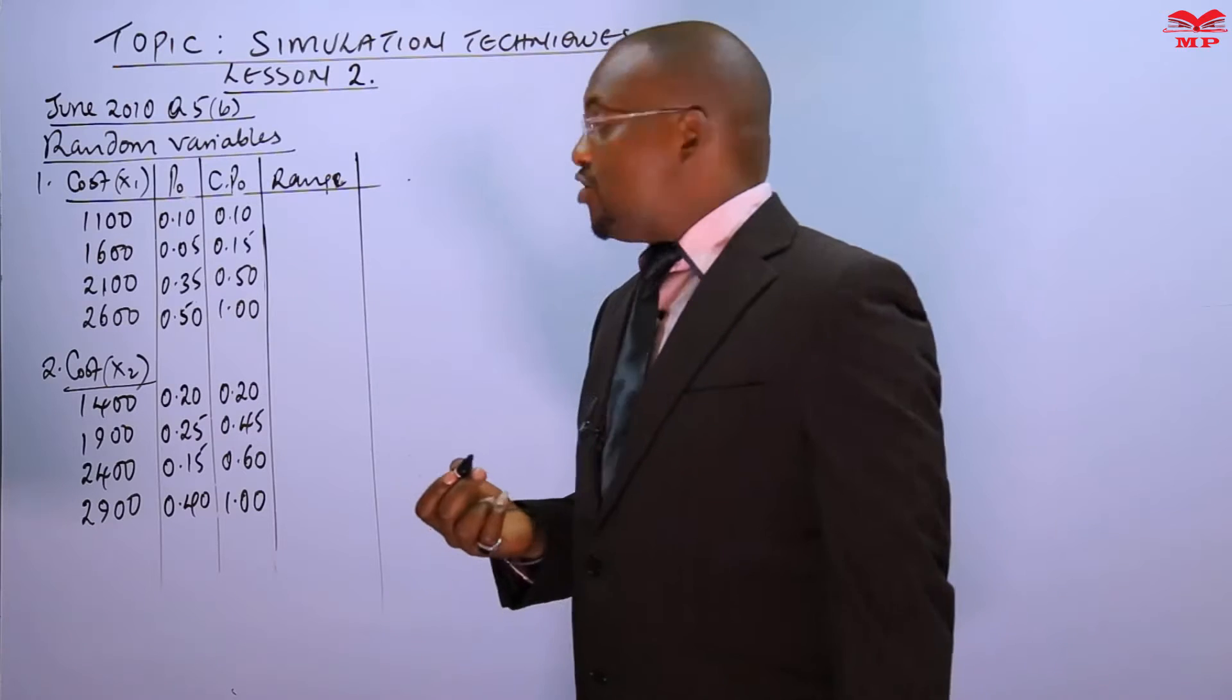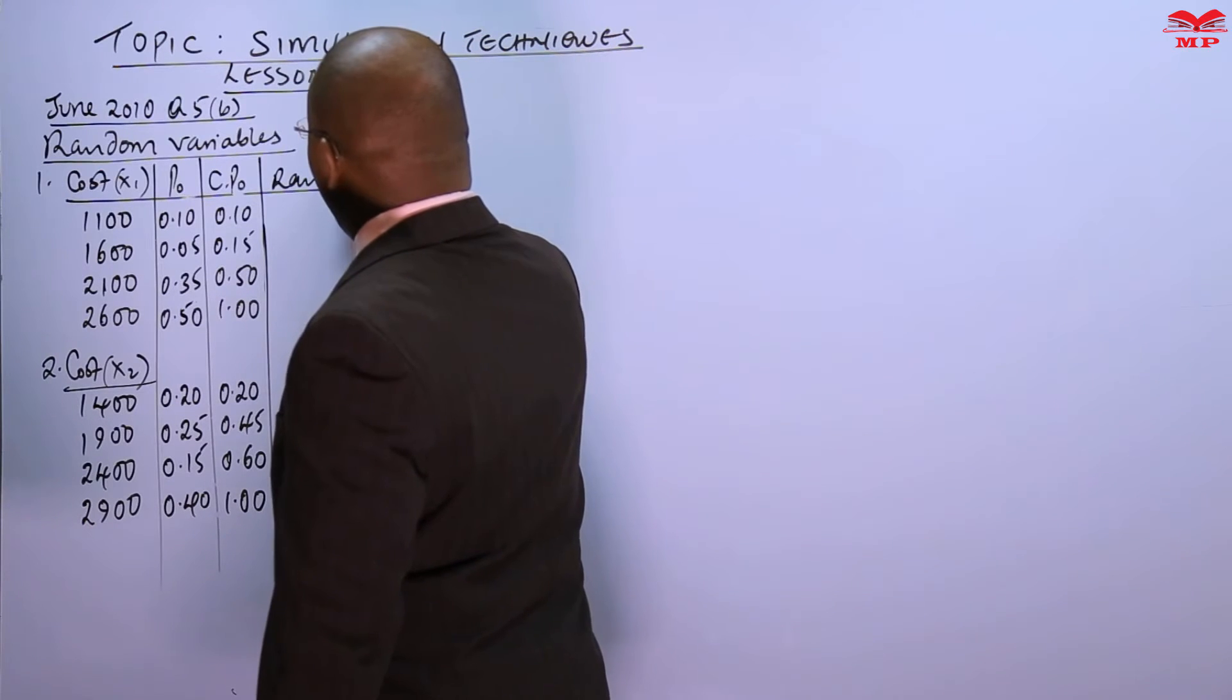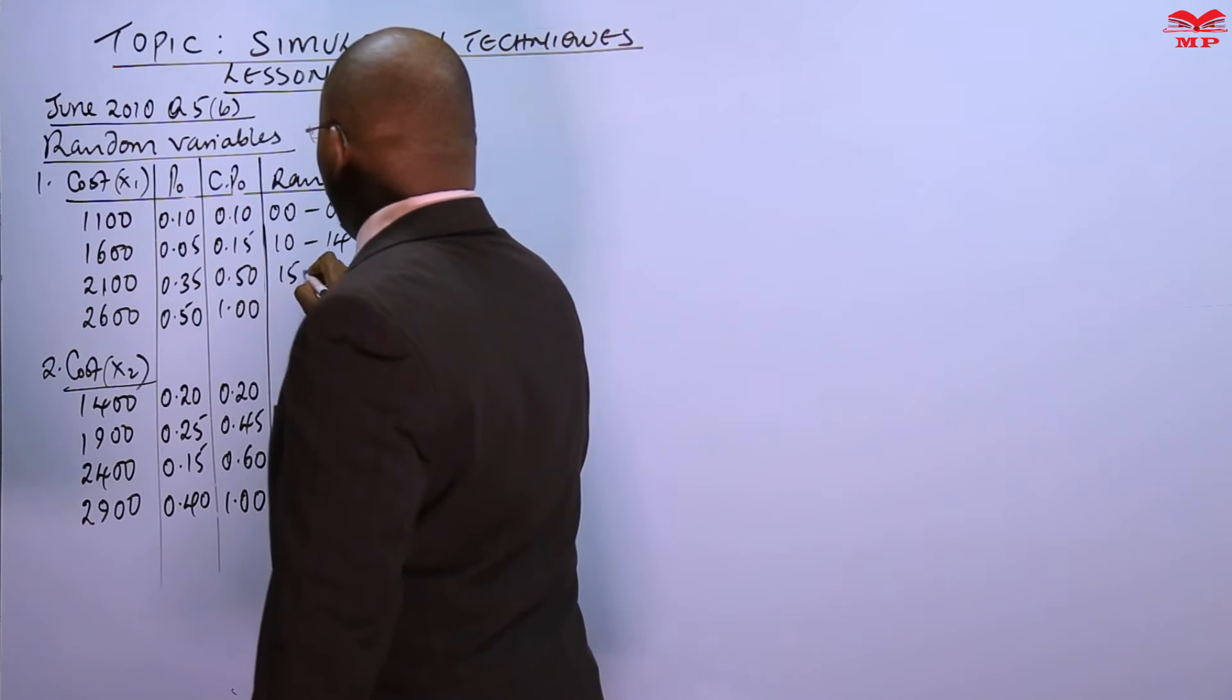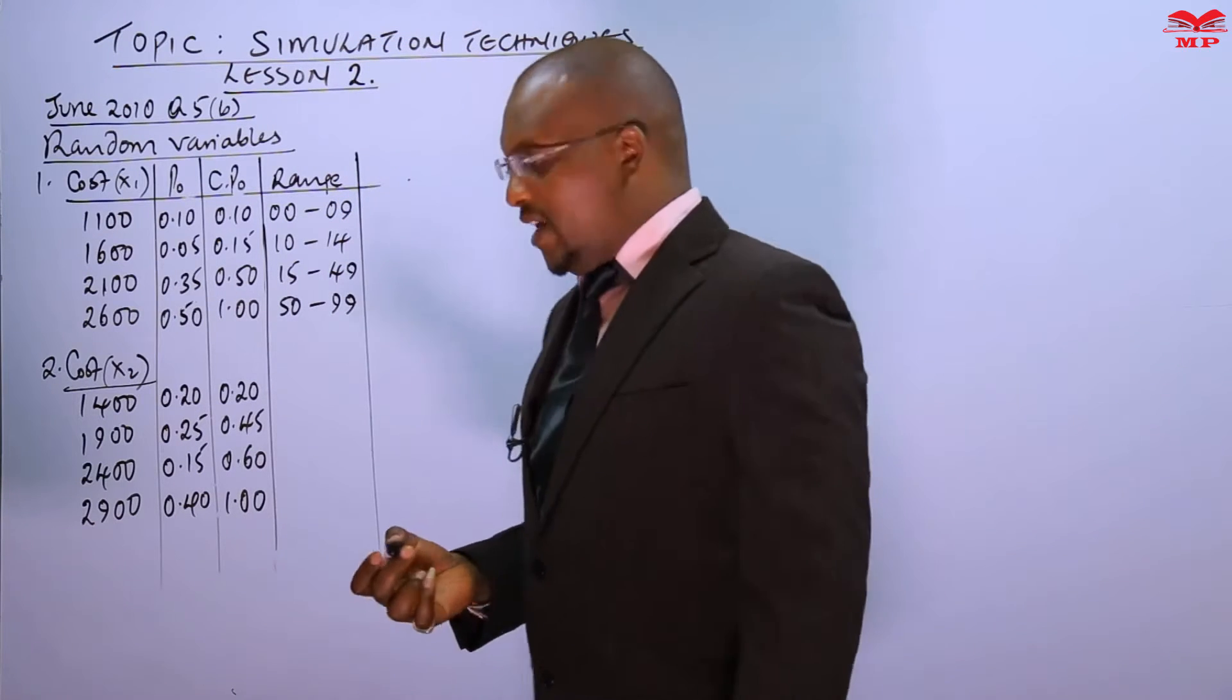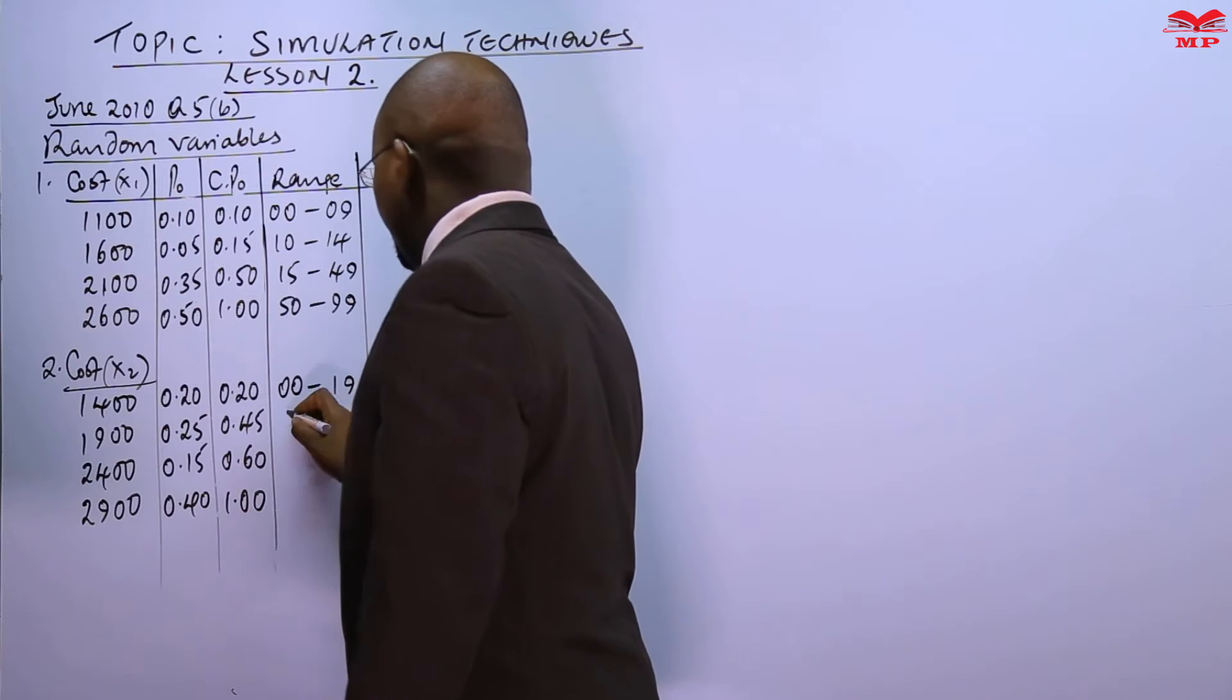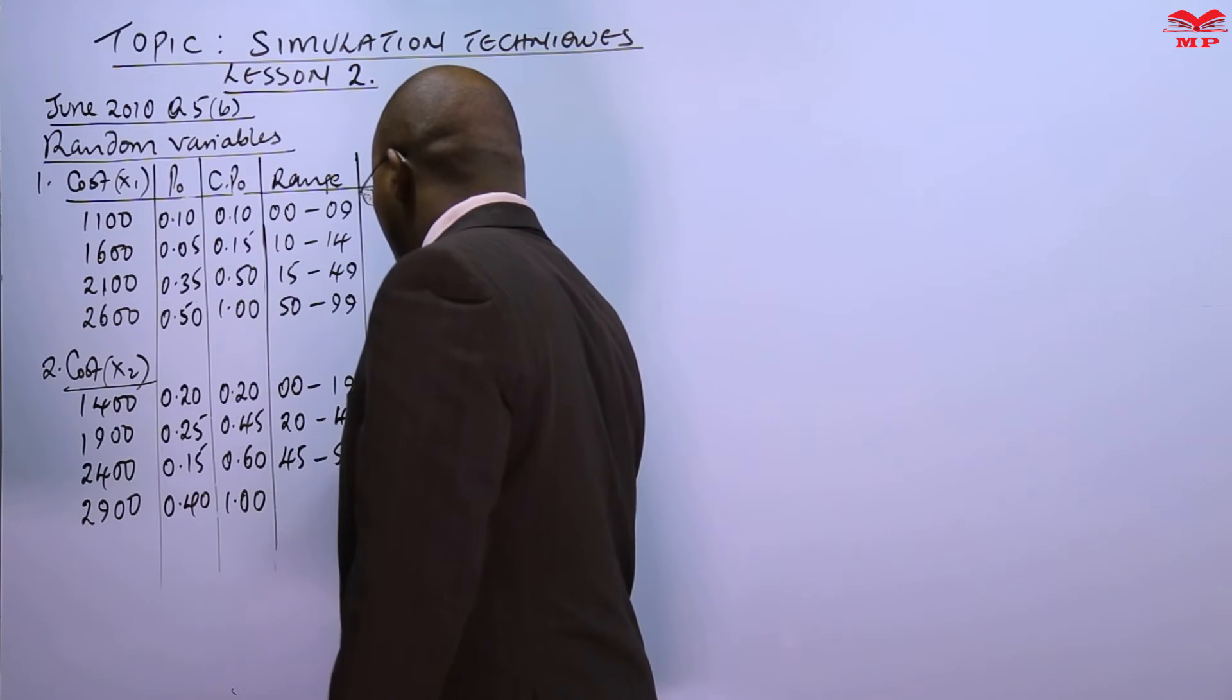Then getting the range, I told you that the range we use 00 up to 99. So starting with 00, we end at 09. This is 10, we end at 14. This is 15, we end at 49. And this is 50, we end at 99. Then the other one is starting from 00, we end at 19. This is 20, we end at 44. This is 45, we end at 59. And this is 60, we end at 99.